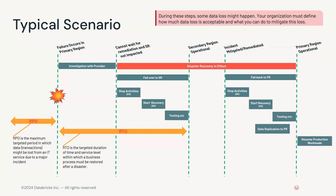We stay on the secondary region until the incident is mitigated. Once that happens, we fail back to the primary region in roughly reverse order: stop all activities in the secondary region, start the recovery process in primary, test the primary region to make sure it's up and running. The final new step here is data replication back to the primary region, which brings the primary region to operational status. We then communicate to end users that it's back online and the primary region is ready to receive workloads.